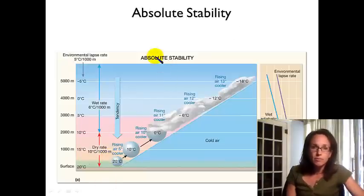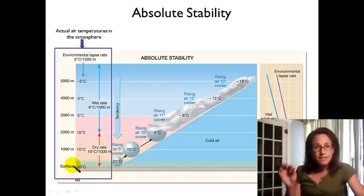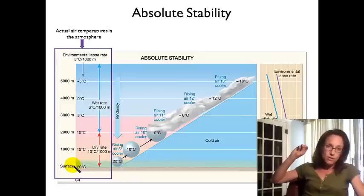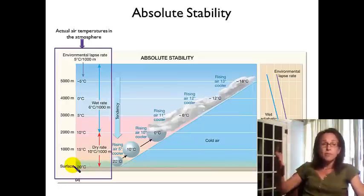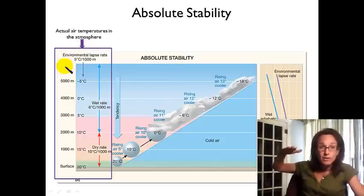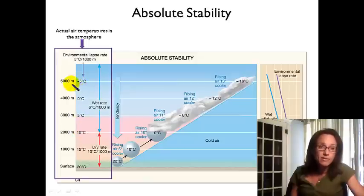Let's start with absolute stability. The first thing we need to look at is the rate of change of temperature as we go up in the atmosphere — this is the actual measured rate. If we took a weather balloon and released it with a thermometer, a radio transmitter, and a GPS unit, it would transmit its elevation and temperature as it rises. In this example, the environmental lapse rate — the rate at which actual air temperature changes with elevation — is five degrees Celsius per thousand meters. Starting at twenty degrees Celsius, we drop five degrees per thousand meters, so by five thousand meters we're at minus five degrees Celsius.